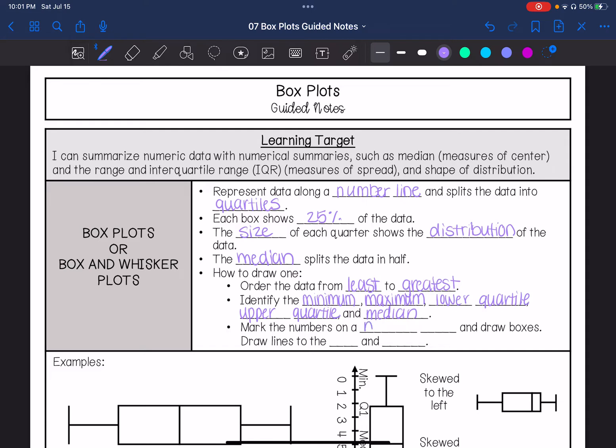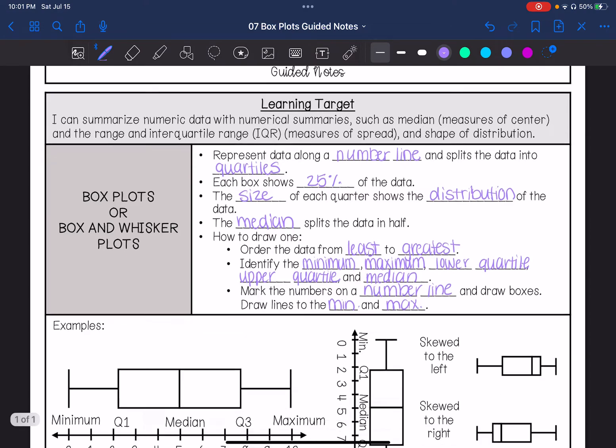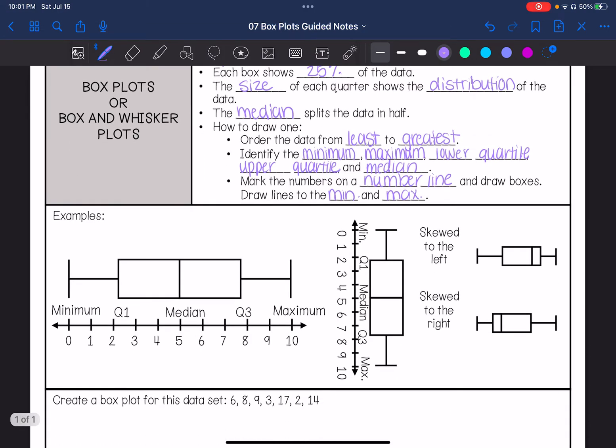You're going to mark the numbers on a number line and draw boxes. Then you draw lines to the minimum and maximum, and I'm going to show you what that looks like. So right here, you have the boxes. The boxes include Q1, median, and Q3. Then the whiskers go out to my minimum and my maximum. You can also see it represented in this vertical way. Here's an example of a box plot that is skewed to the left. And this is an example of a box plot that is skewed to the right.